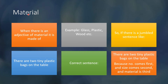The next component is material — what something is made of. Examples: glass, plastic, wood, wooden, etc. If there is a jumbled sentence like 'There are two tiny plastic bags on the table,' this is actually correctly ordered. This is because the number (two) comes first, the size (tiny) comes second, and the material (plastic) comes third.